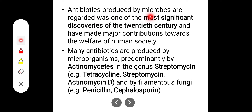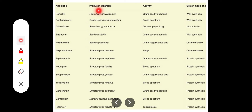Antibiotics produced by microbes are regarded as one of the most significant discoveries of the 20th century and have made major contributions to human welfare. Many antibiotics are produced by microorganisms, predominantly by actinomycetes in the genus Streptomyces — for example, tetracycline, streptomycin, and actinomycin D. Filamentous fungi produce penicillin and cephalosporin. For example, Penicillium chrysogenum produces penicillin, which acts on gram-positive bacteria by inhibiting cell wall synthesis.